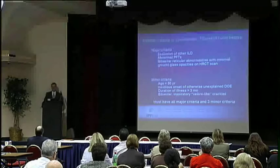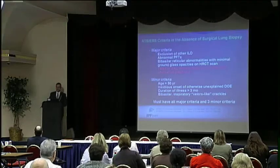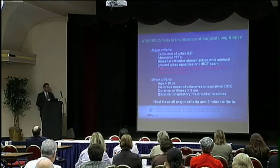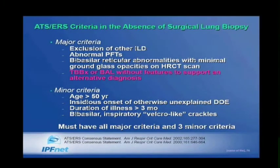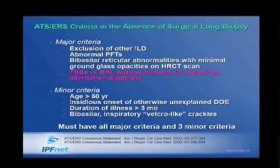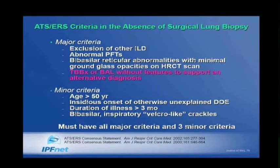The criteria used in diagnosing IPF in the absence of surgical lung biopsy, per the ATS/European Respiratory Society consensus statement, include major criteria: exclusion of other interstitial diseases, abnormal PFTs, bibasilar reticular abnormalities with minimal ground glass, and a transbronchial biopsy or BAL with no features supporting an alternative diagnosis. Minor criteria include age over 50, insidious onset of otherwise unexplained dyspnea on exertion, duration of at least three months, and bibasilar inspiratory velcro-like crackles. To make the diagnosis without surgical lung biopsy, you must meet all major criteria and at least three of the minor criteria.